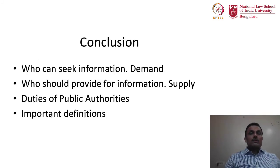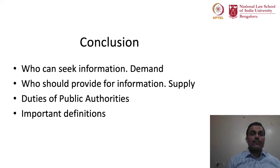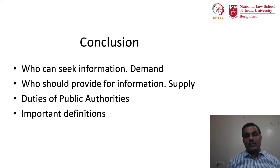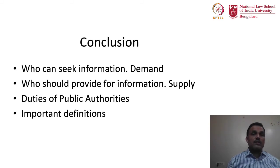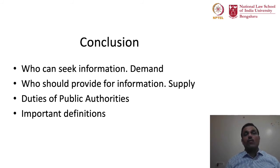Let us conclude this chapter on the Salient Features of the Right to Information Act. What we discussed in this chapter is that we started off with the definitions under Section 2. Some of the important definitions covered are of appropriate government, competent authorities, what is information, and what is a record — these are some of the important definitions we covered.